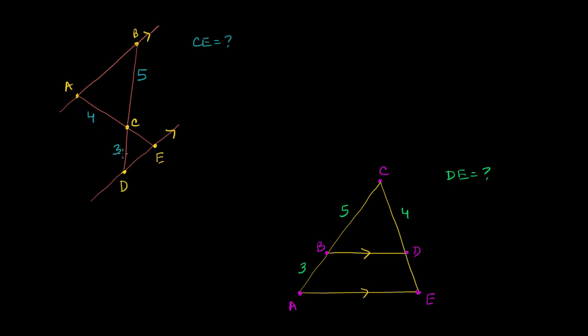In this first problem, we're asked to find out the length of segment CE. We have these two parallel lines — AB is parallel to DE — and then we have these two transversals that form two triangles.